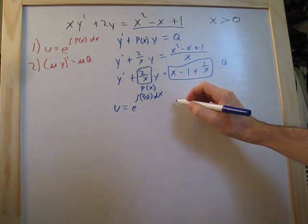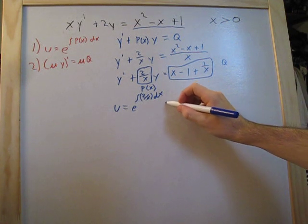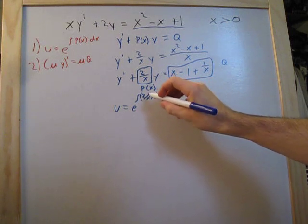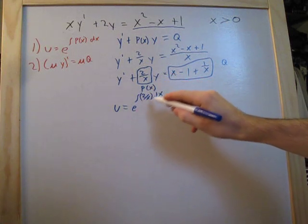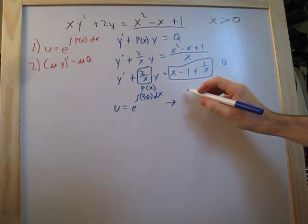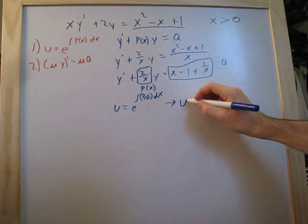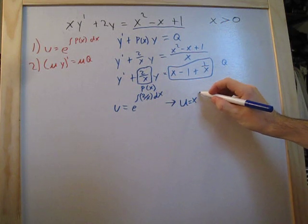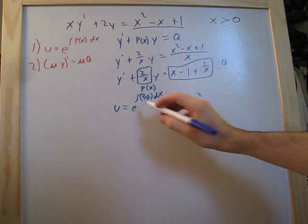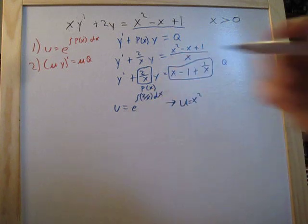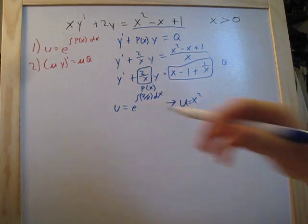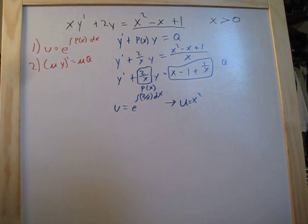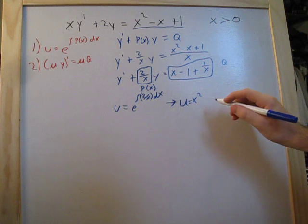Now we can solve for u. Once we evaluate that integral, u comes out to x squared. You can verify that yourself, but it's pretty straightforward, so we'll skip showing that step.